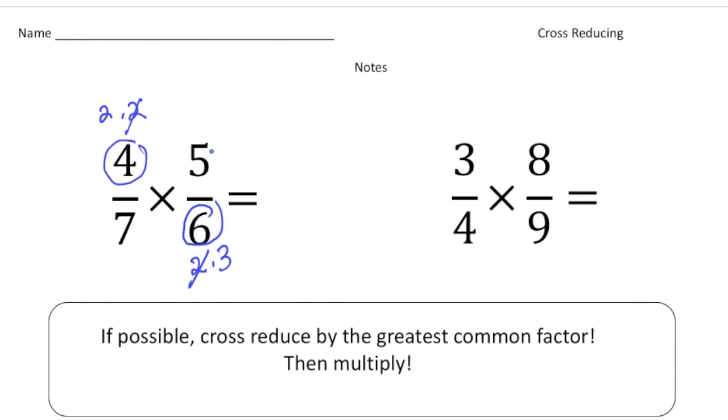So 2 times 5 is 10, and 7 times 3 is 21. Notice when you cross reduce your final answer will always be simplified. That's kind of a hidden benefit of cross reducing. At the end you're done.